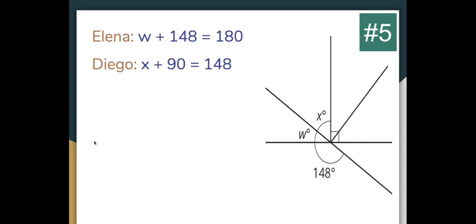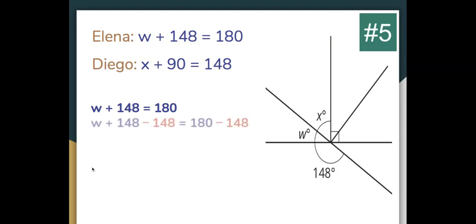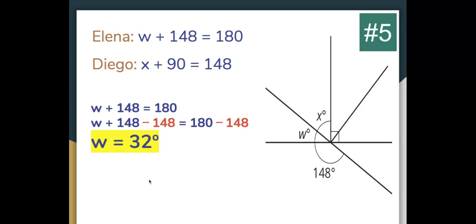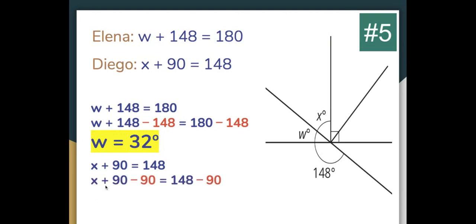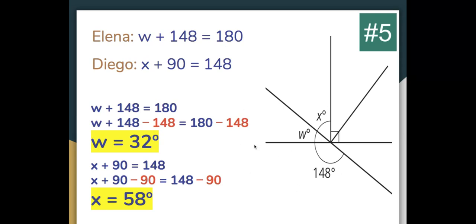We can now use their equations to solve. Using Elena's equation: W plus 148 equals 180, subtract 148 from both sides, giving W equals 32 degrees. Using Diego's equation: X plus 90 equals 148, subtract 90 from both sides, giving X equals 48 degrees. There is more than one way to look at the situation and solve for the unknowns.